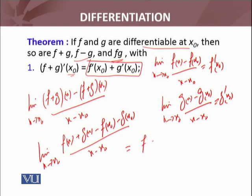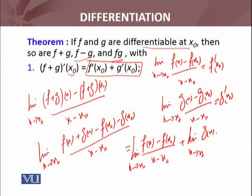This further equals - I can write this as [f(x) - f(x₀)]/(x - x₀). In fact what I'm doing is: lim(x→x₀) [f(x) - f(x₀)]/(x - x₀) + lim(x→x₀) [g(x) - g(x₀)]/(x - x₀). Here I have used how f + g is defined, and also used the limit result that the limit of two functions can be split.